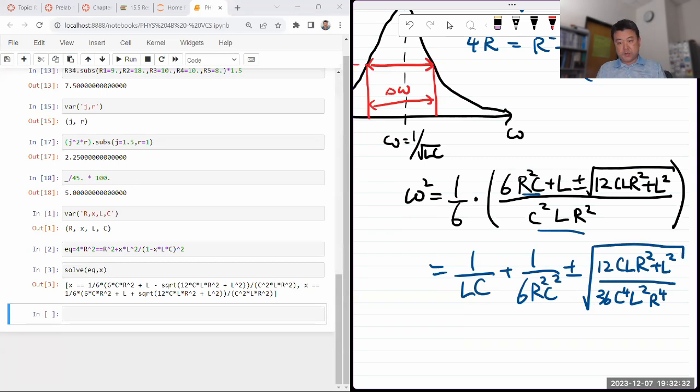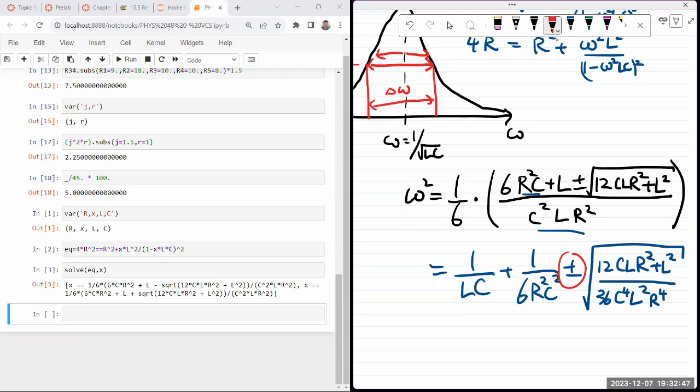And this is what I wanted to mainly demonstrate. When you look at this, this plus minus is basically what's giving you this right side and the left side of that delta omega. And as you look at that, look at this expression here, and see how this behaves as R goes to infinity, or as R goes to zero.